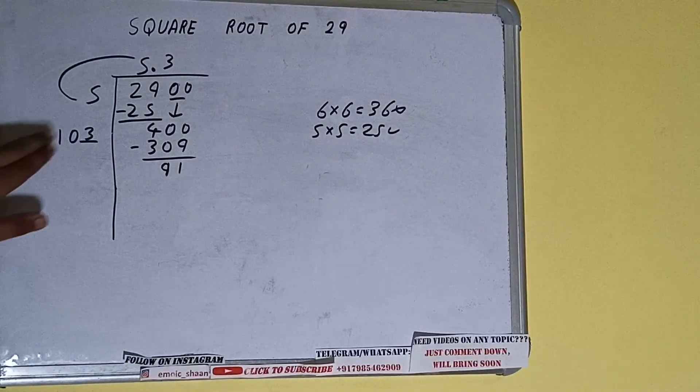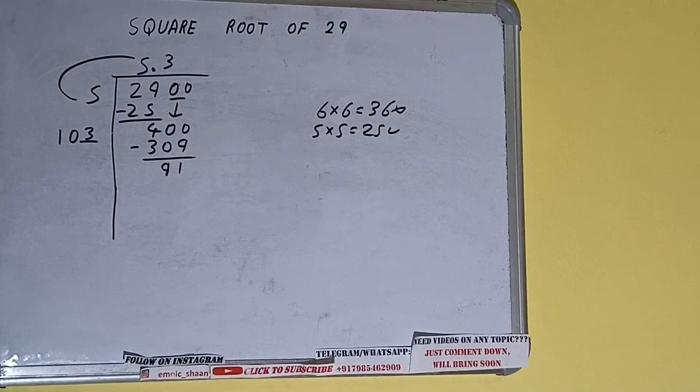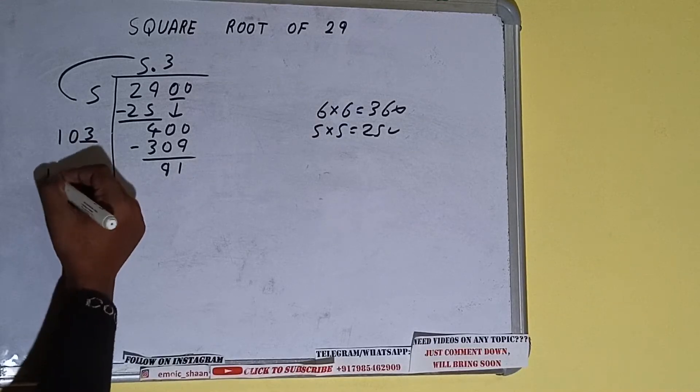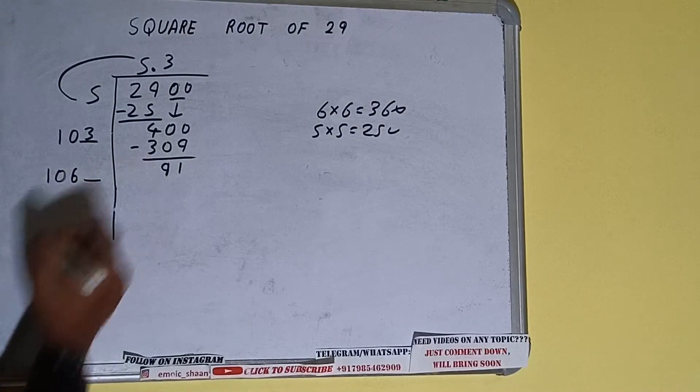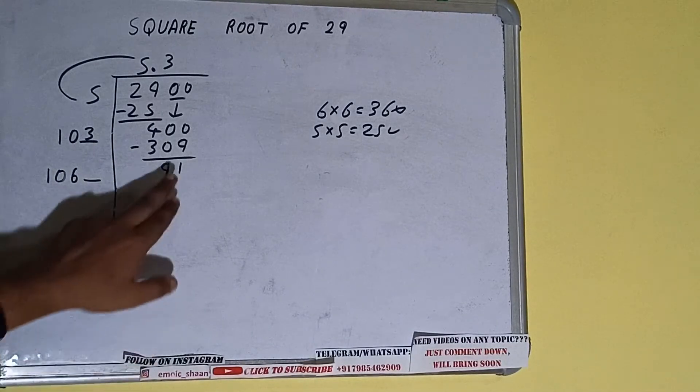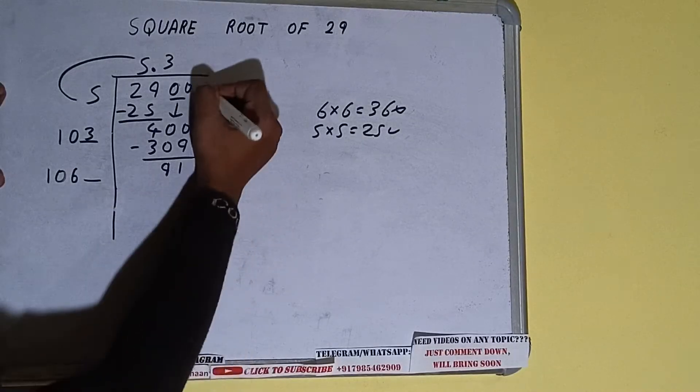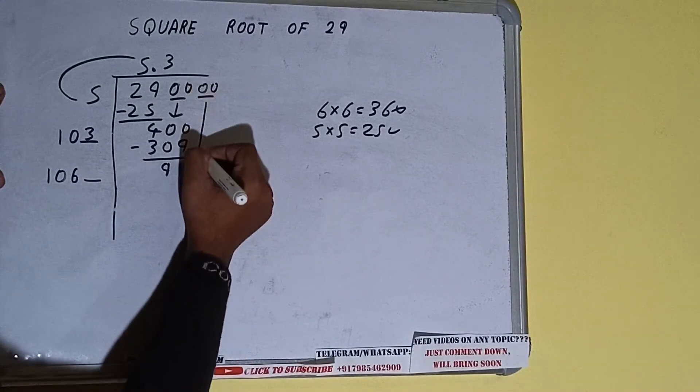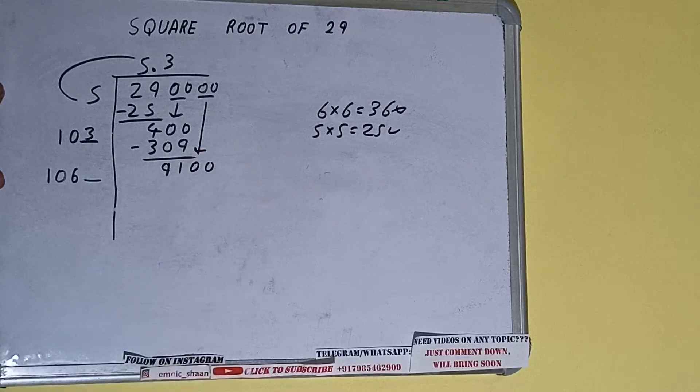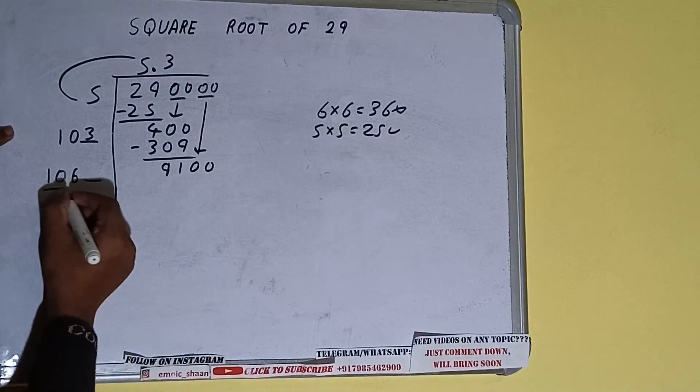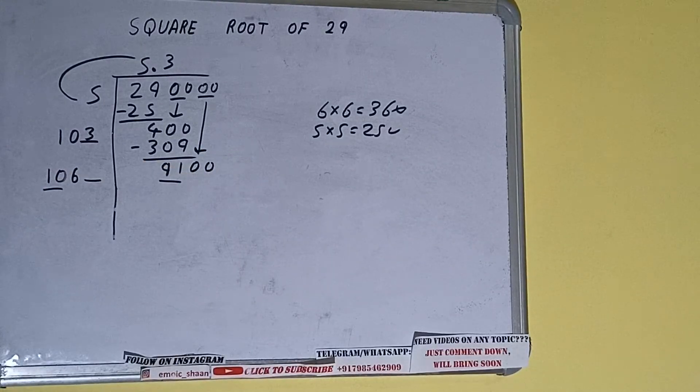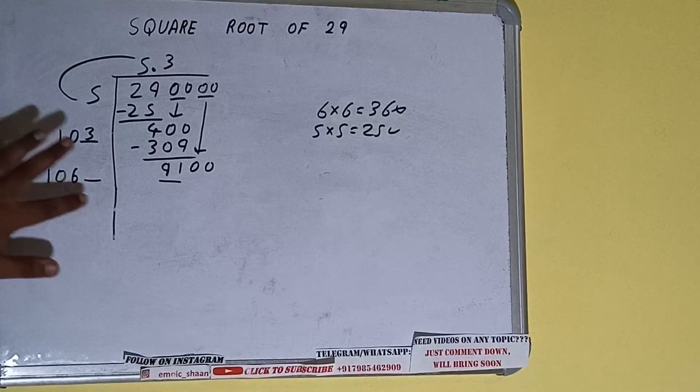Now 103 into 3 we did so add both, so 103 plus 3 will be 106. Write it here and keep a digit extra. And this number we need to make it big so bring the next pair of zeros down and number will become as 9100. Now we can compare this 10 with this 91. So 10, 9 times is 90, so we can try 9 times.